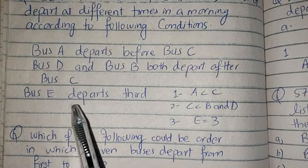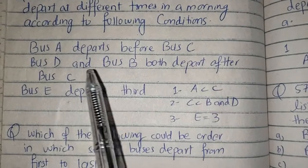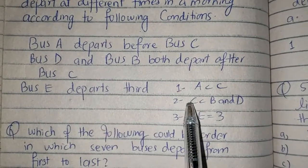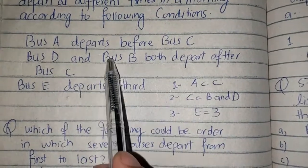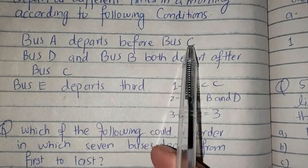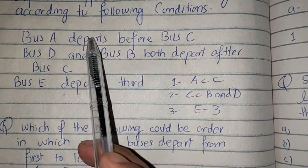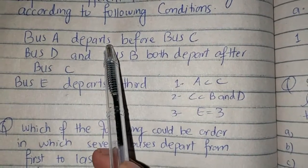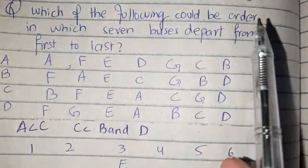Means joh E hai woh third pe jayega, E equal to three ho jayega. D and B both depart after bus C — D aur B joh hain woh after bus C jayenge, to C less than B and D. C pehle jayega, B and D uske baad jayenge. Bus A departs before bus C — means A joh hai woh C se pehle jayega. Yeh hamare paas statement se logic change ho chuki hai.